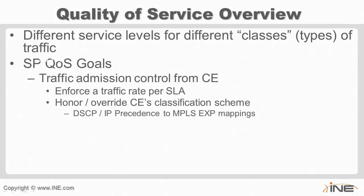We'll look at different QoS models the service provider can enforce when traffic is received from the customer. The key question is: do we want to change the customer's marking scheme or leave it alone? Do we want the customer's markings to influence queuing in the provider's core? This is completely up to the service provider. We'll discuss the pipe model versus the uniform model — essentially whether we honor or change the customer's classification as traffic is admitted into the service provider network.